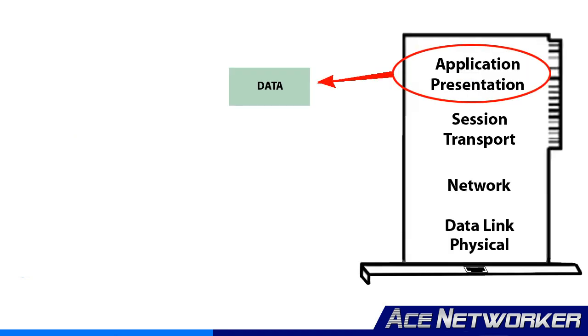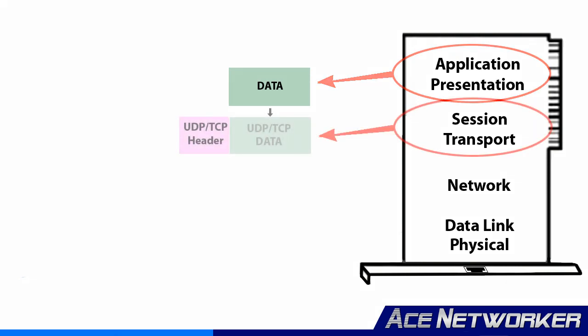To summarize the previous videos in this lesson: when data or information is packaged up by the protocol stack on a sending device and sent down through that device's protocol stack out its NIC, or network interface card, onto the network cable, it is placed into a Layer 3 packet first — with headers at the beginning of the data and a CRC, or cyclic redundancy check, on the end.